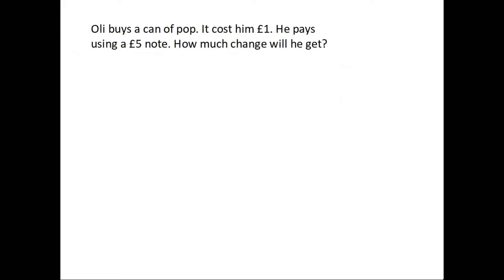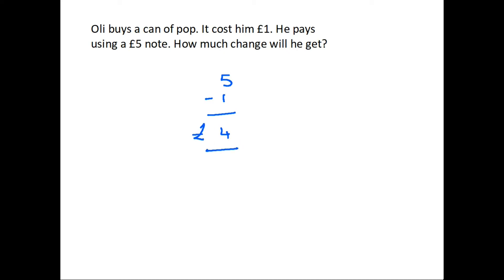Here's an example where Ollie is buying a can of pop. It costs him £1 and he pays using a £5 note. We're being asked how much change will he get. No clues again — we have to decide which sum we need to do. Since he's paying with a £5 note but the drink is only costing him £1, we need to find the difference: £5 minus £1 means he's going to get £4 back in change. So in this case it was a subtraction, but again you had to work that out.